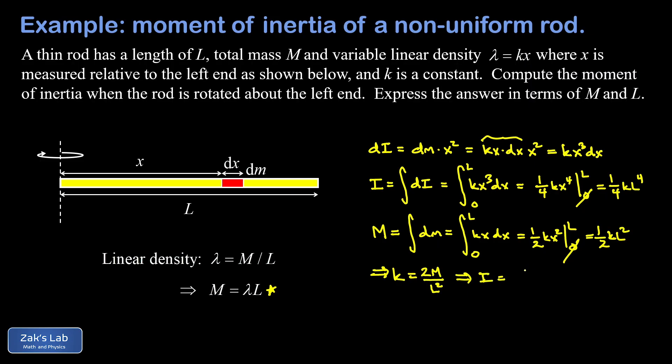And I have a moment of inertia of one quarter times k, which we now know is 2M over L squared times L to the fourth. And two factors of L are going to cancel, leaving us with L squared in the numerator, and a two cancels,